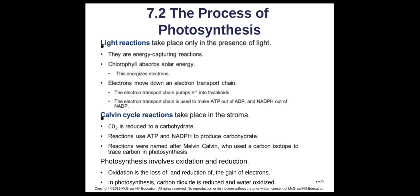The Calvin cycle reactions — formerly called dark reactions — are where carbon dioxide from the atmosphere is reduced, meaning it gains electrons. These reactions use the ATP and NADPH made in the light reactions to make sugar. The Calvin cycle got its name from Melvin Calvin, who used a carbon isotope with more neutrons to trace what was happening during photosynthesis.